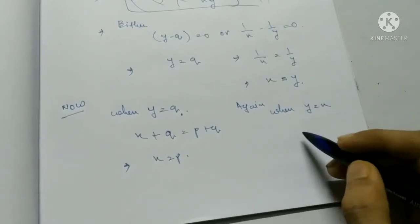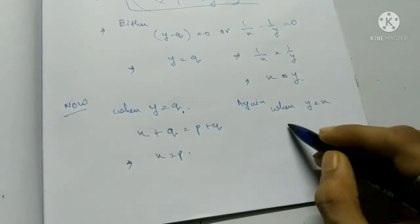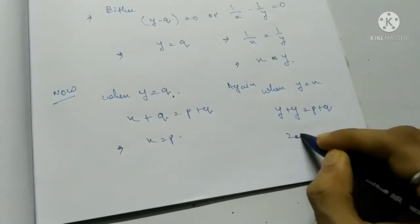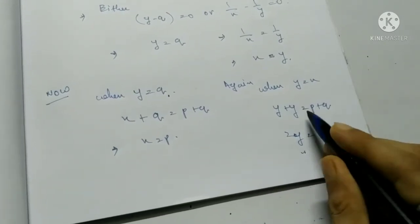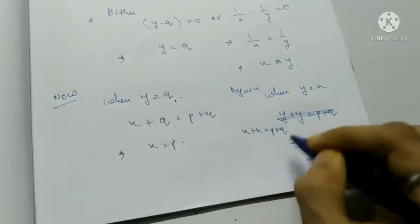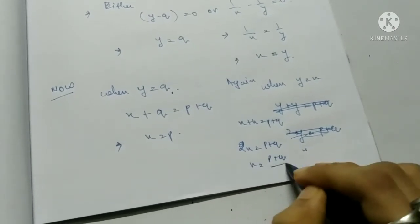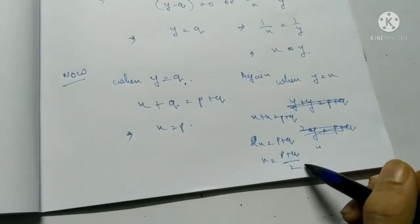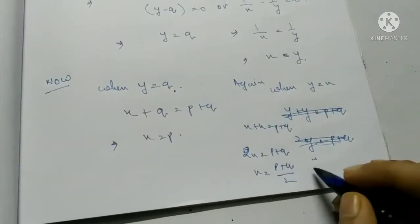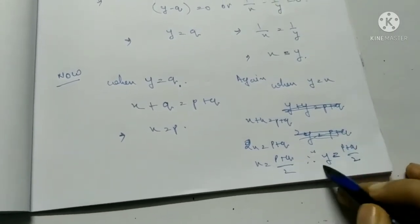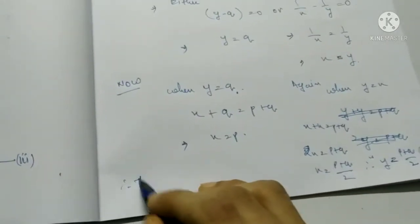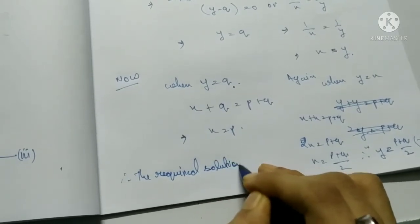When y equals x, substituting in equation 1: x plus x equals p plus q, so 2x equals p plus q, giving x equals (p plus q)/2. Since y equals x, y equals (p plus q)/2 as well. Therefore the required solutions are (p, q) and ((p plus q)/2, (p plus q)/2).